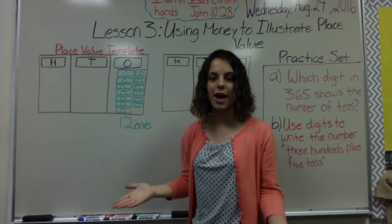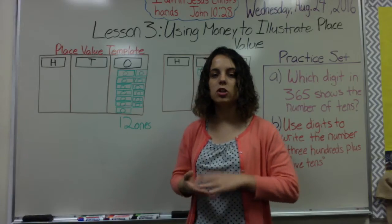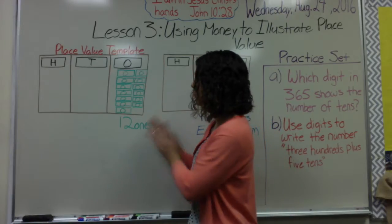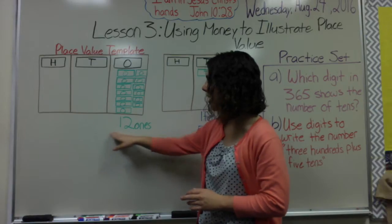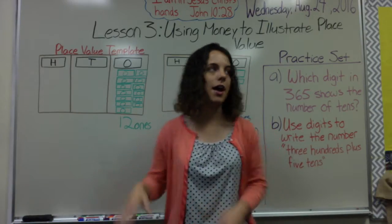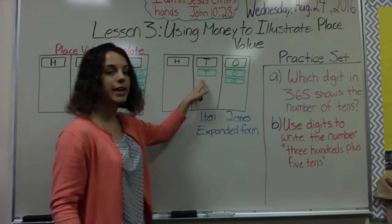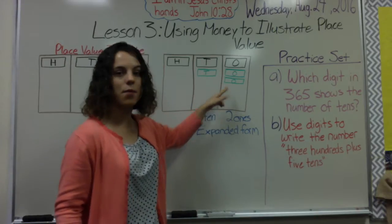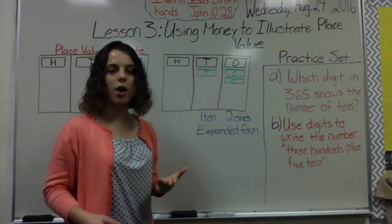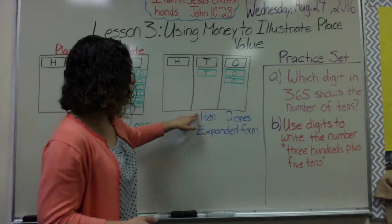That's a lot of cash to carry around, so it's better to simplify and make it as few bills as possible. It gets really crowded if I have twelve ones, so I can split it up to look like this: one ten-dollar bill and two ones. That way I'm only carrying three bills instead of twelve bills — it's less to keep up with.